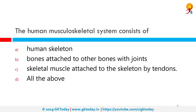The human musculoskeletal system consists of what? It consists of the human skeleton, bones attached to other bones with joints, and skeletal muscles attached to the skeleton by tendons — all of the above. The human musculoskeletal system is an organ system that gives humans the ability to move using their muscular and skeletal systems. It provides form, support, stability, and movement to the body.